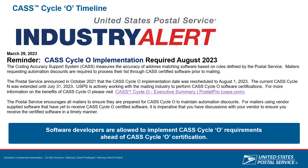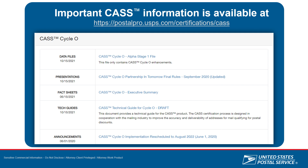For anyone who wants more information, we have our PostalPro website that contains all the presentation materials, and a version of this presentation is also on the PCC website. You can go there to get any announcements, technical guides, fact sheets, and our executive summary about CAAS. Our contact information is also available for our support desk, so feel free to go out and look at this if you have any questions about the CAAS Cycle O implementation effective August 1st.